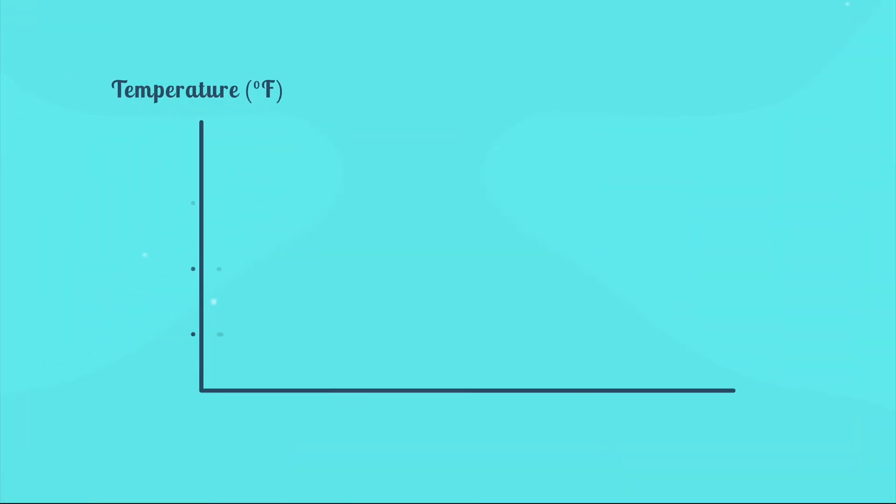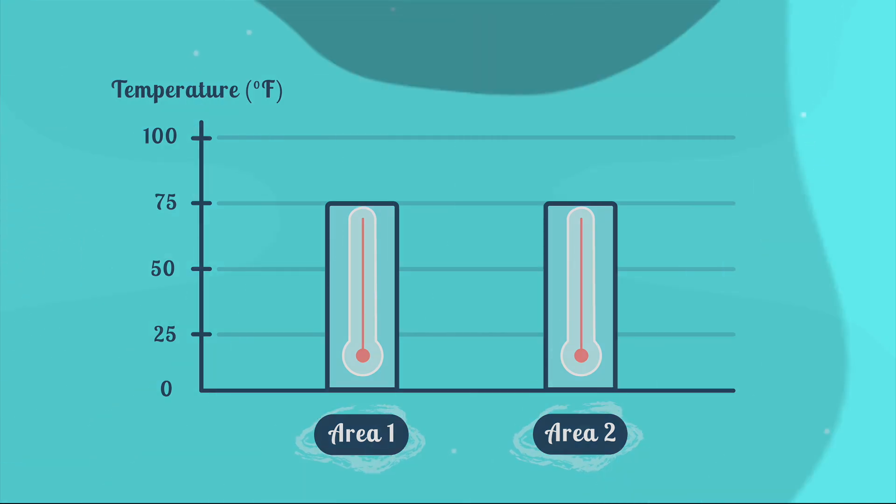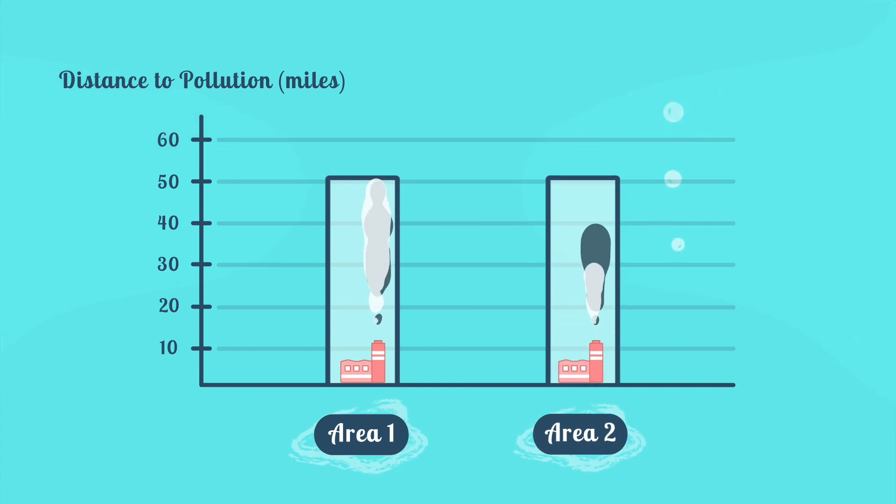When we look at our results, we can see that water temperature was almost exactly the same in area number one as it was in area number two. We can also see that both areas were just about the same distance away from a source of pollution, and that the source of pollution was actually pretty far away.